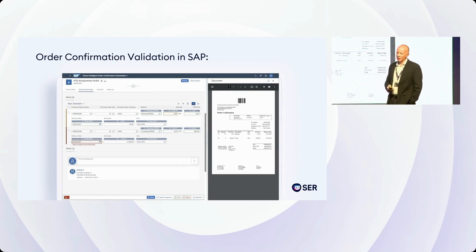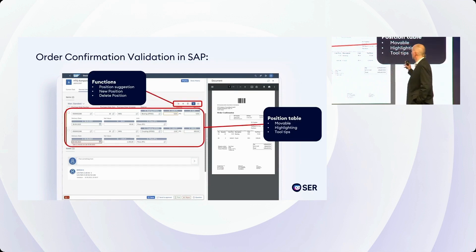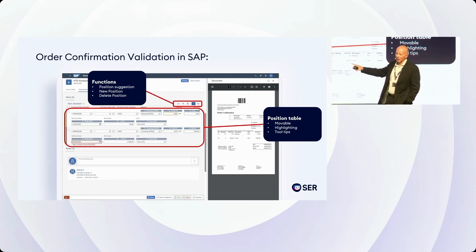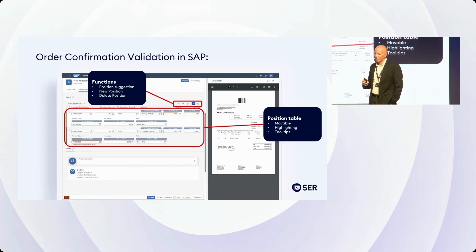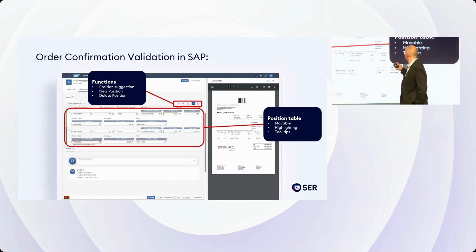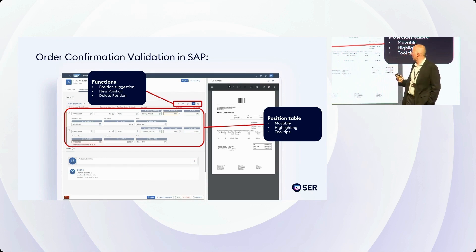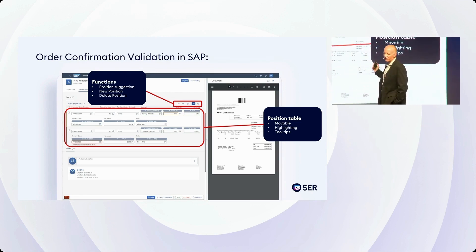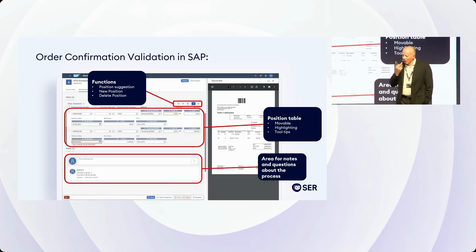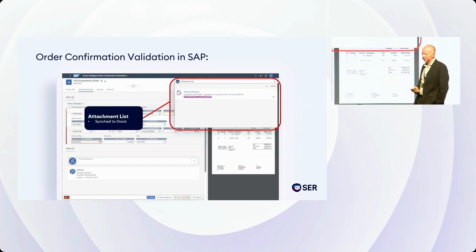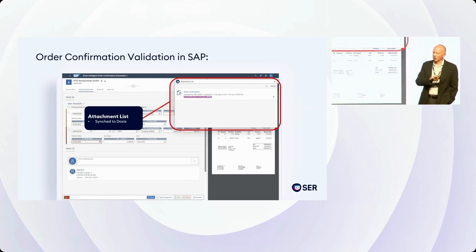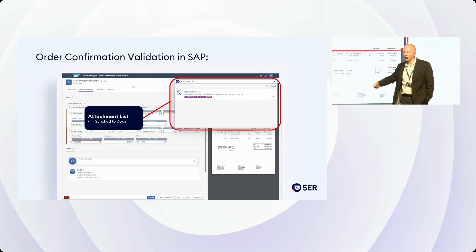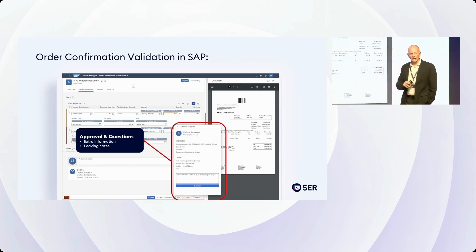Moving on, we've got the position table. Here you can see the information pulled from the document or from another data source, the line items and position. On the right, you can see the baskets which give you line item suggestions directly. The user can be prompted by the contents of the blue bar as well. We can choose to view, add, and delete positions using the function buttons, and we can also add notes and queries. We can view the attachment list — as you saw Max earlier dragging a document into SAP — which is then synchronized with DOCSIS, so you can view those documents from within either system.